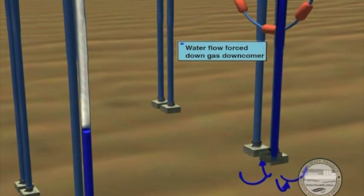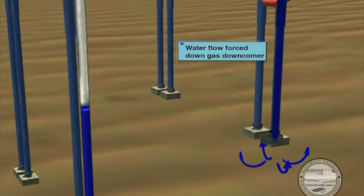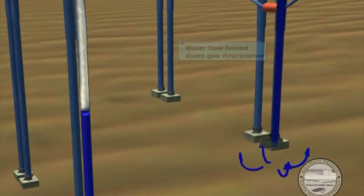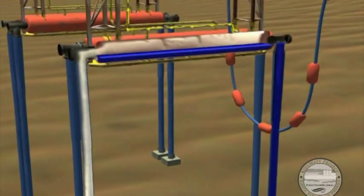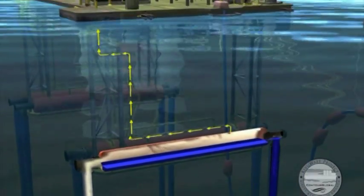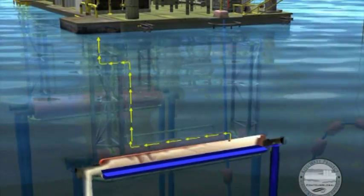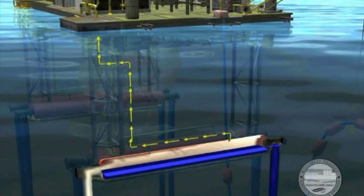De-gassed water is returned safely to the lake to maintain the ecosystem balance. As they rise, the gas and water enter a separator, a large cylindrical vessel located about 20 meters below the gas extraction platform.